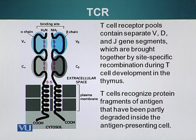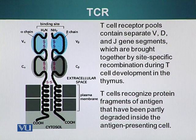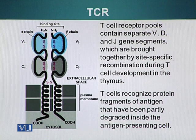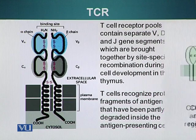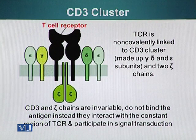T cell receptors recognize fragments of antigen, whereas B cell antibodies can recognize intact antigen. A key difference between BCR and TCR is that the TCR cannot recognize antigen on its own — it needs help from MHC molecules that display these antigens. Another difference is that the binding of a T cell with antigen on MHC molecules is very weak, so co-receptors are needed to stabilize this interaction.